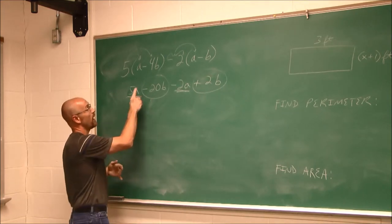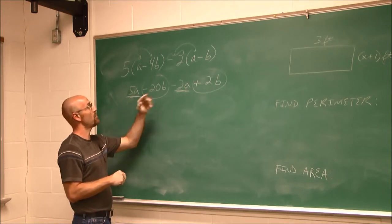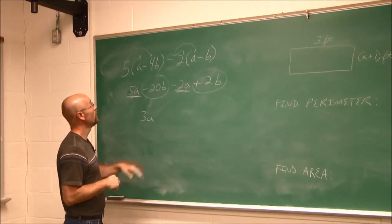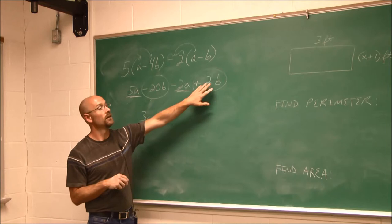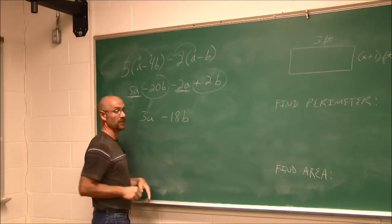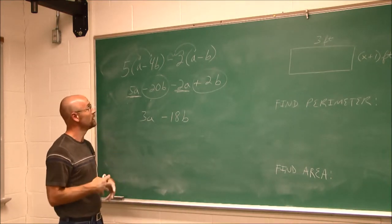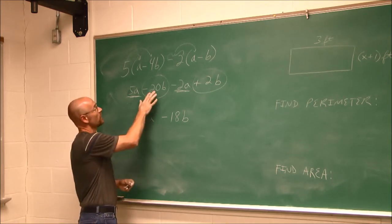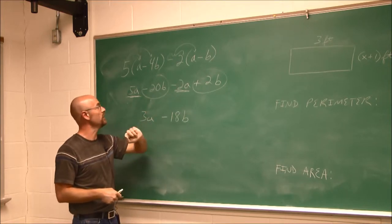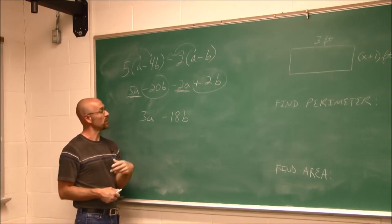Now I underline the like terms with a's and circle the like terms with b's. 5a and negative 2a: 5 minus 2 is 3a. Negative 20b and positive 2b: different signs, difference of 20 and 2 is 18, and the larger value is negative, so negative 18b. These are not like terms with each other, so it's as far as we can go. Use whatever combination of tools helps you get where you need to go.